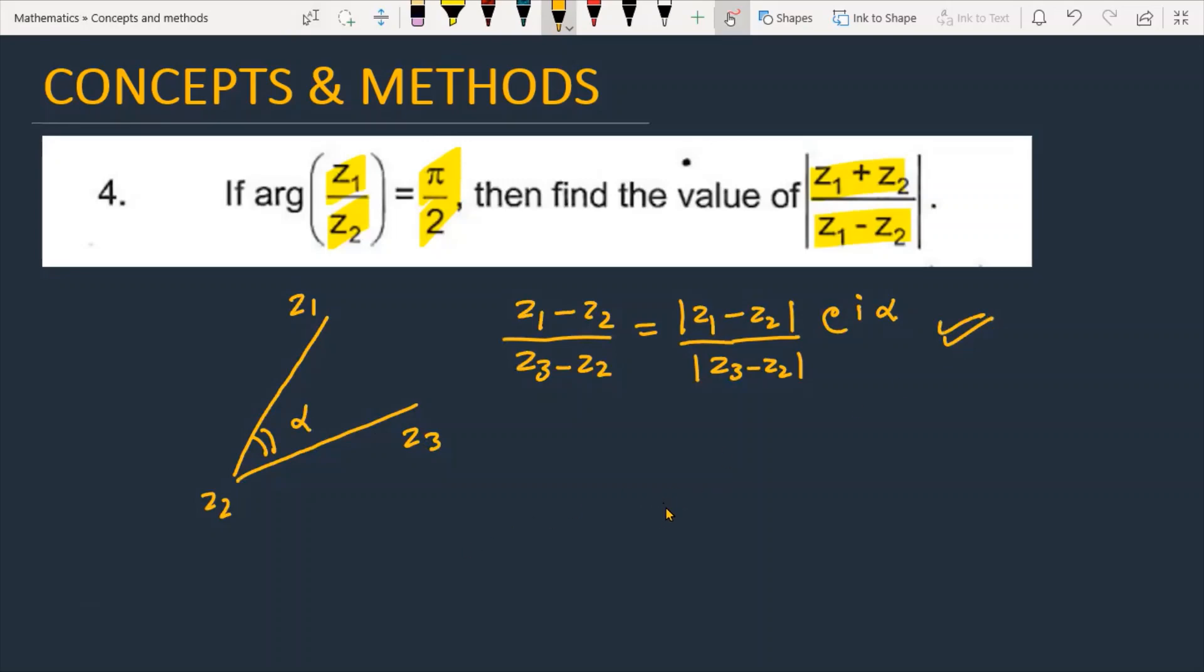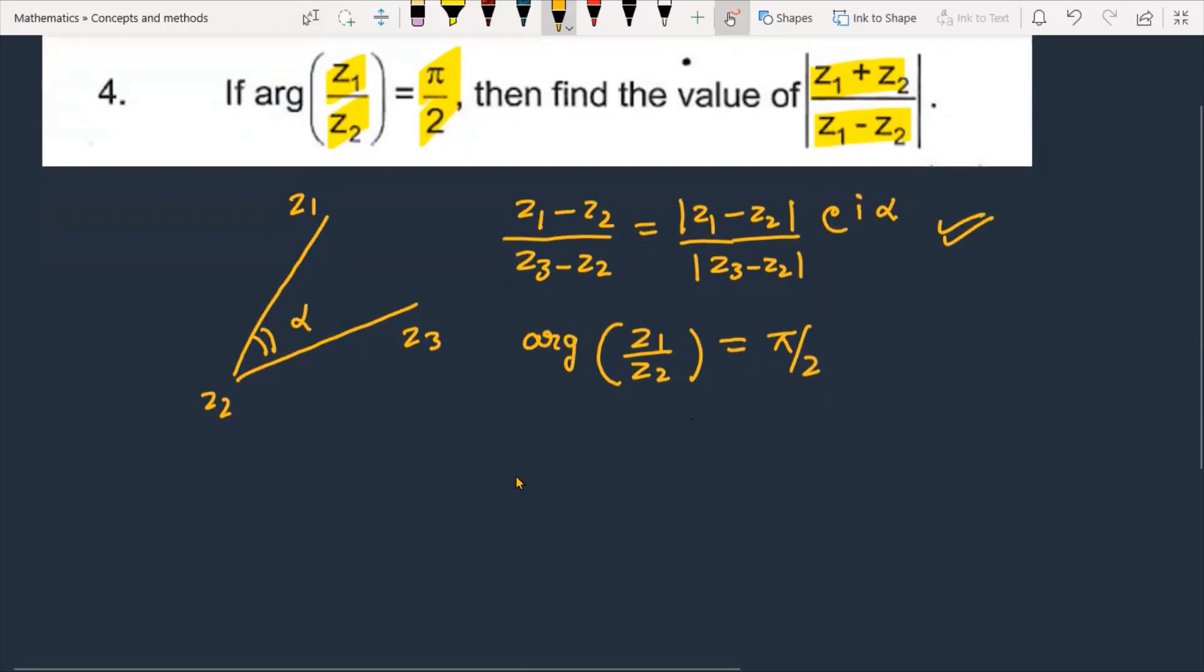I expect this will quickly solve the problem. Now see the statement we have given: argument of z1 upon z2 equals π by 2. We can write this as argument of z1 minus 0 divided by z2 minus 0.